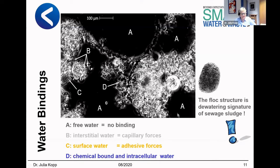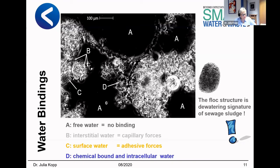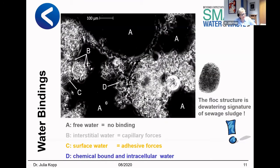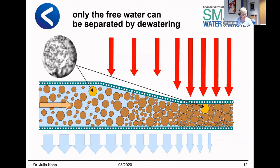The flock structure itself is the dewatering signature of a sewage sludge. We take this particle in a belt filter press to understand why only the free water can be separated. You have a belt filter press, you increase the pressure, and the particle here is the same as here. In this phase you have only particles and the water inside the sludge particles — this water will remain. Therefore, the structure of your particles describes the dewaterability itself.